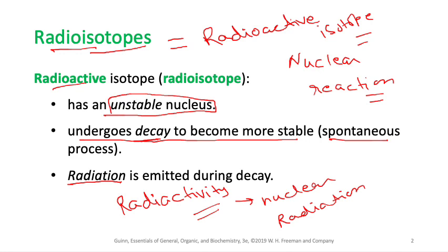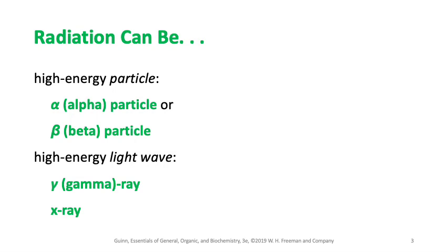Most isotopes that are unstable release energy in the form of heat or radiation, and that energy release is called radioactivity. When an unstable radioisotope converts into a stable one, it emits different forms of radiation: alpha particles, beta particles, gamma rays, and sometimes X-rays. Make sure you know these four.